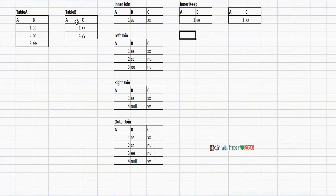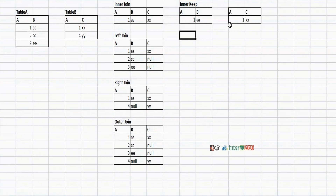Instead of combining these two tables into a single table, Keep maintains two tables individually with the number of records reduced based on join conditions. Individual smaller tables means less loading time and high performance.